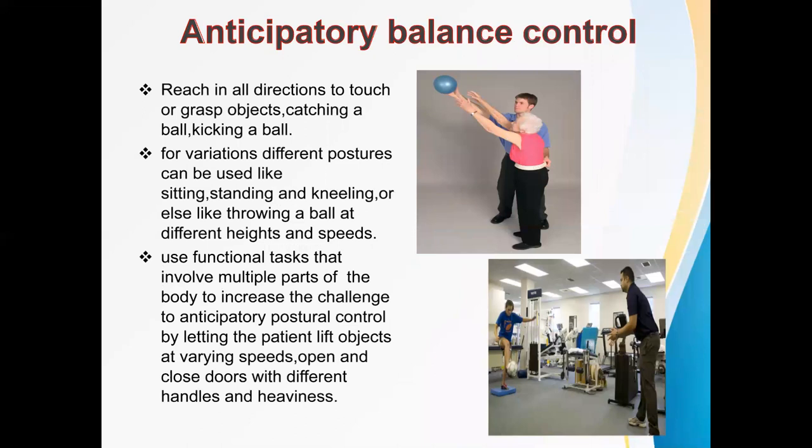Next is anticipatory balance control. This involves interventions of touching or grasping objects, catching a ball, or kicking a ball. For variations, different postures can be used such as sitting, standing, and kneeling. Functional tasks that involve multiple parts of the body can be included to increase the challenge to anticipatory postural control.